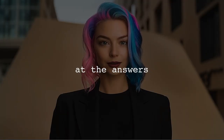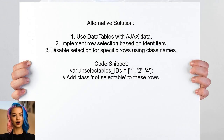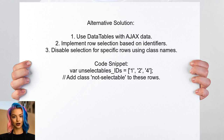Now let's look at the answers provided by other users. An alternative approach involves using the data tables library with Ajax-populated data. They suggest implementing a mechanism to disable row selection based on specific identifiers, utilizing checkboxes for selection and dynamically identifying which rows should be unselectable.